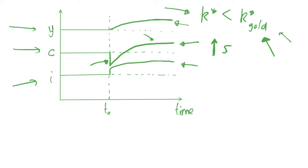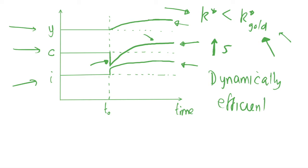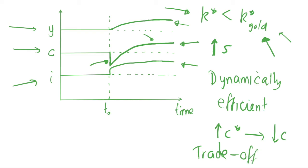This economy is dynamically efficient — the previous one was dynamically inefficient, this one is efficient. Why? Because we can only increase consumption in the long run by decreasing consumption in the short run. This means we have a trade-off between the short run and the long run, so we can say we are dynamically efficient. Whether we actually want to move to the golden rule steady state depends on how we weight present consumption against future consumption.